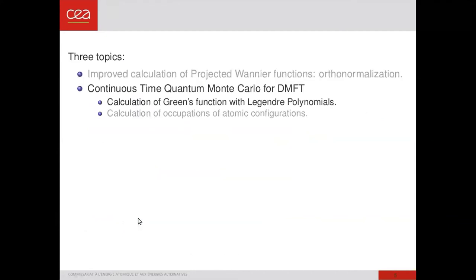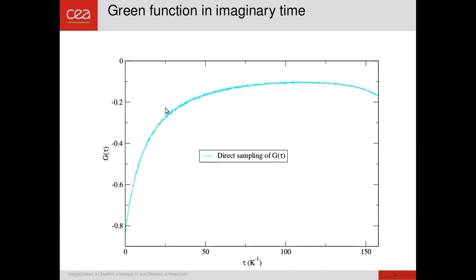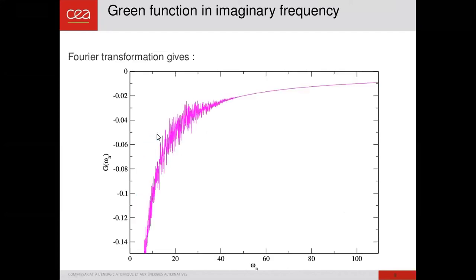Now I would like to shift to quantum Monte Carlo calculation. And first, the technical point to reduce the noise. The standard output of continuous time quantum Monte Carlo calculation is the Green function in imaginary time, G of tau, which looks like this. As this quantity is extracted from Monte Carlo calculation, it has some noise. And when we do the Fourier transform to imaginary frequency, the noise is still visible, as you see in this plot.